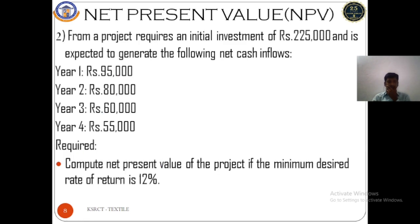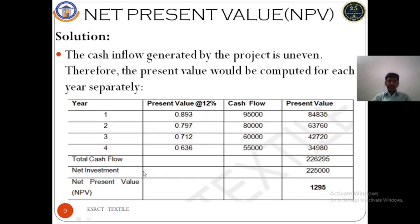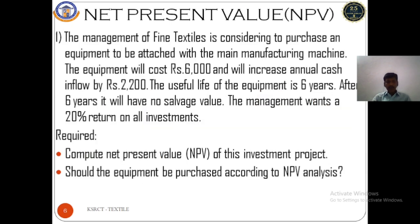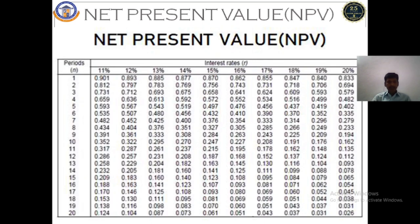For the second example, we look at uneven cash flows across different years. The project requires a net investment of 2,25,000 and is expected to generate different net cash inflows over years 1 to 4. We compute the NPV using a minimum desired rate of return of 12%. From the present value table at 12%, the discount factors for years 1, 2, 3, and 4 are 0.893, 0.797, 0.712, and 0.636 respectively.